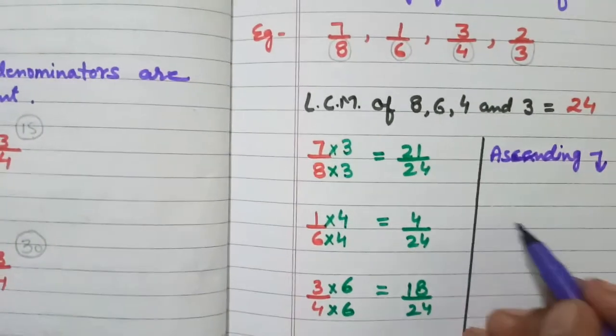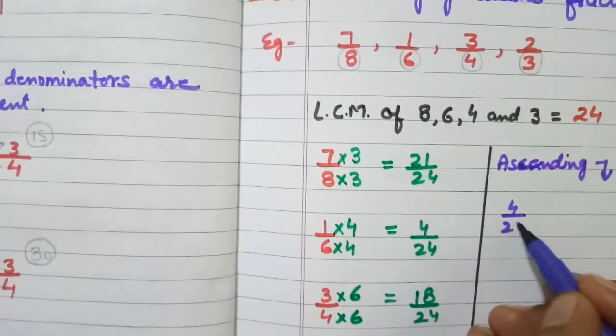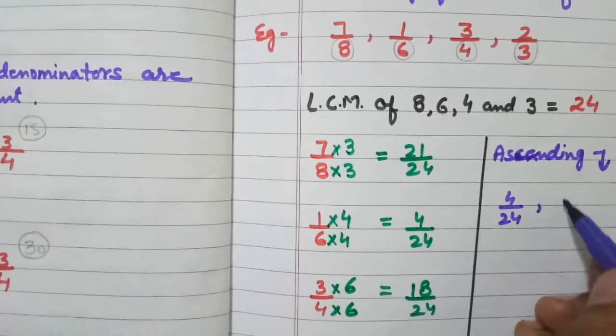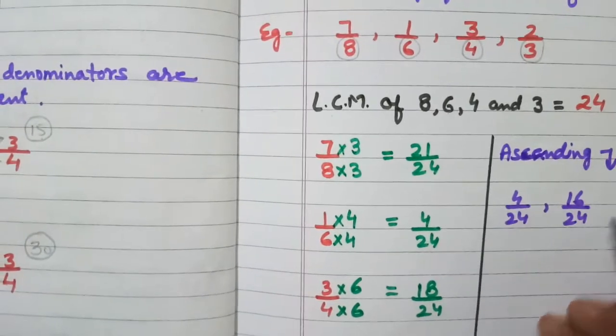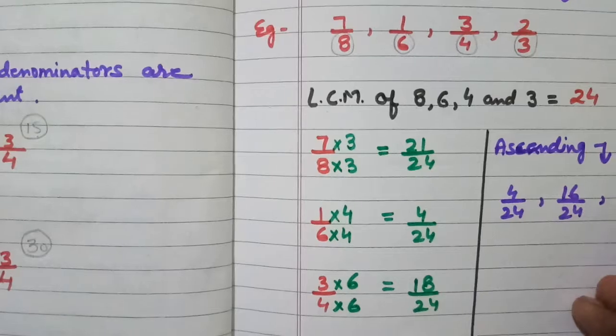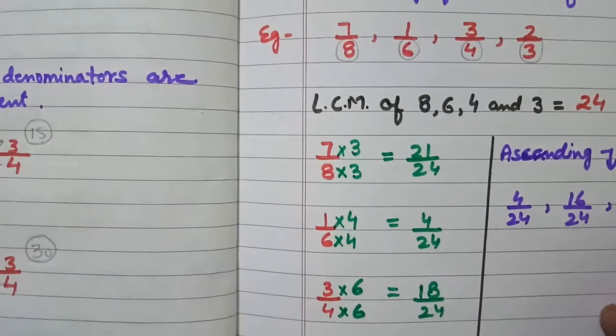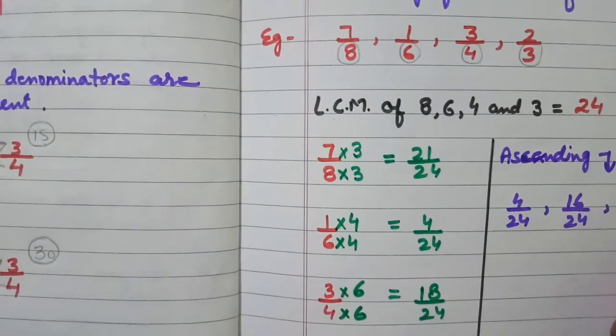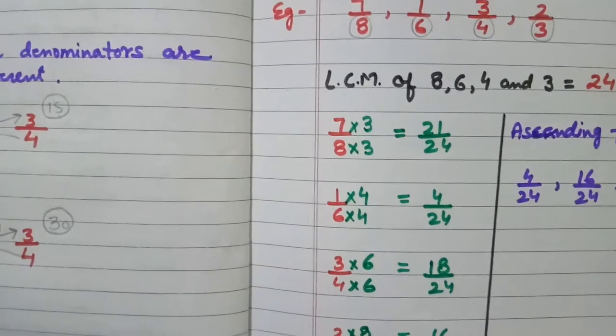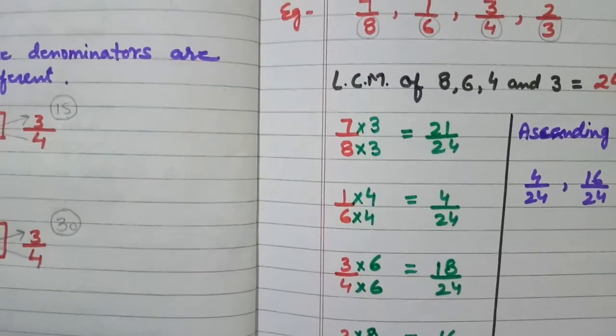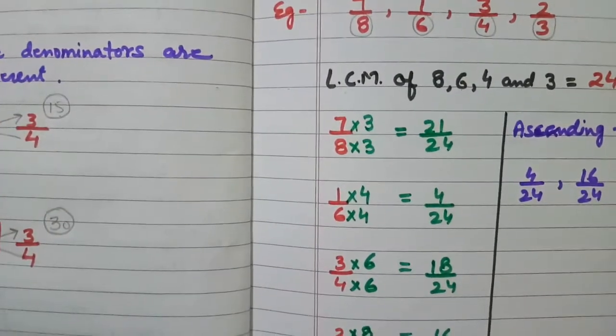Now you see 4 upon 24. Then it is 16, 16 upon 24. Then it is 18 upon 24. And 21 upon 24. Okay. But children remember, this is not our original fraction.